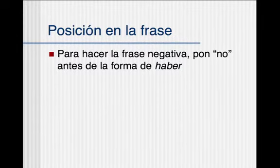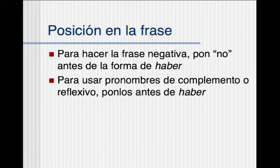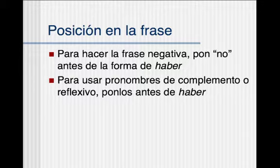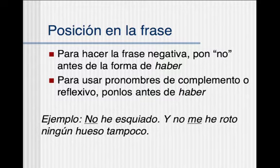Notice the position in the sentence. To make a sentence negative con no, the no comes before la forma de haber — so the no comes before that first verb. And when we use pronombres de complemento o reflexivo — like me, te, se, lo, la, los, las — they also go before haber. You never really break up the haber and the participio pasado. For example: yo no he esquiado — I haven't skied. Y no me he roto ningún hueso tampoco. Roto comes from romper (to break). So I haven't broken any bones either. Notice the position of the negative as well as the pronoun.